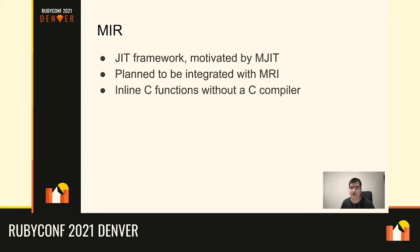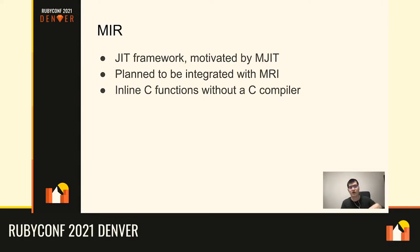We also hear about MIR, a JIT framework created by the same author as MJIT. MJIT works by running a C compiler, but running a C compiler for each JIT compilation takes a lot of time. So, motivated by that, the same author designed a JIT framework that implements a C compiler inside the framework itself, compiling C code into IR without executing another C compiler process — removing that bottleneck of MJIT.